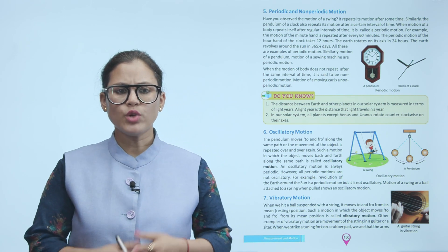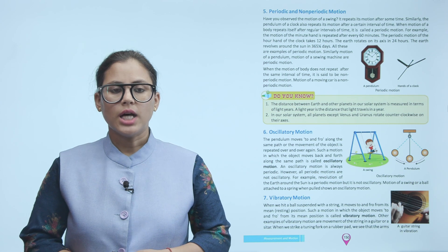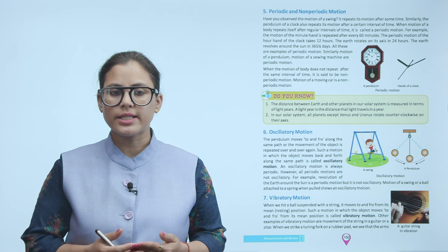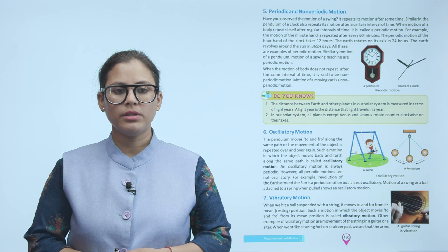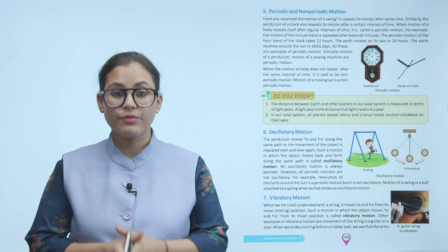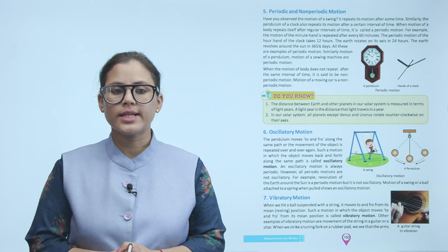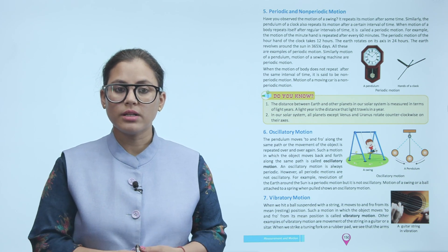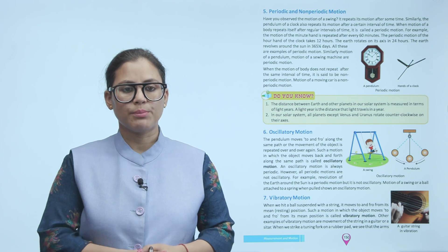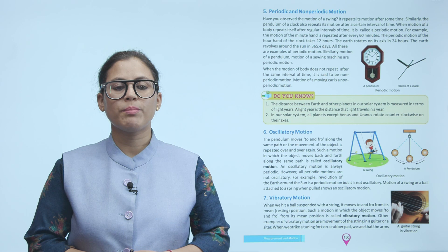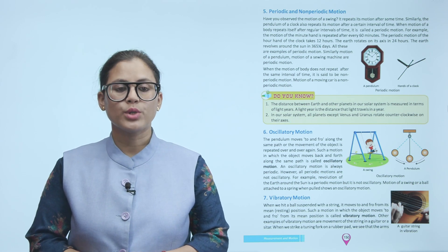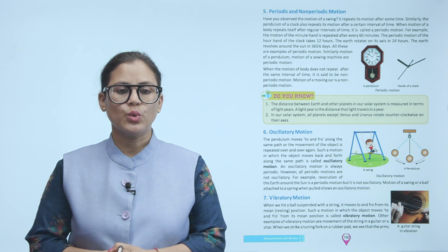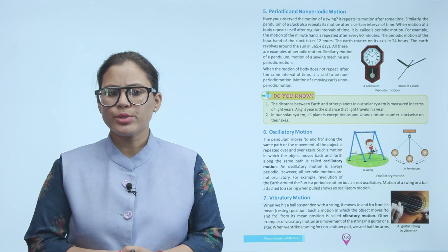Periodic and non-periodic motion: Have you observed the motion of a swing? It repeats its motion after some time. Similarly, the pendulum of a clock repeats its motion after a certain interval of time. When the motion of a body repeats itself after regular intervals of time, it is called periodic motion. Examples: the minute hand repeats every 60 minutes, the hour hand takes 12 hours, the earth rotates on its axis in 24 hours, and the earth revolves around the sun in 365¼ days. When the motion of a body does not repeat after the same interval of time, it is said to be non-periodic motion — for example, the motion of a moving car.